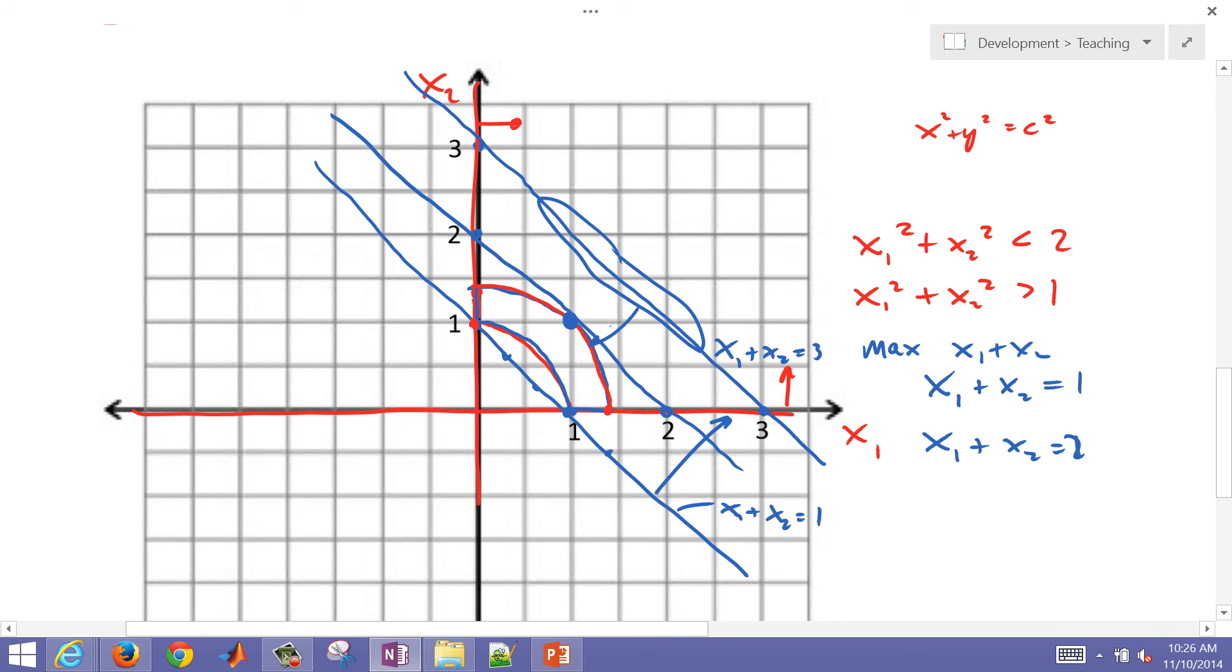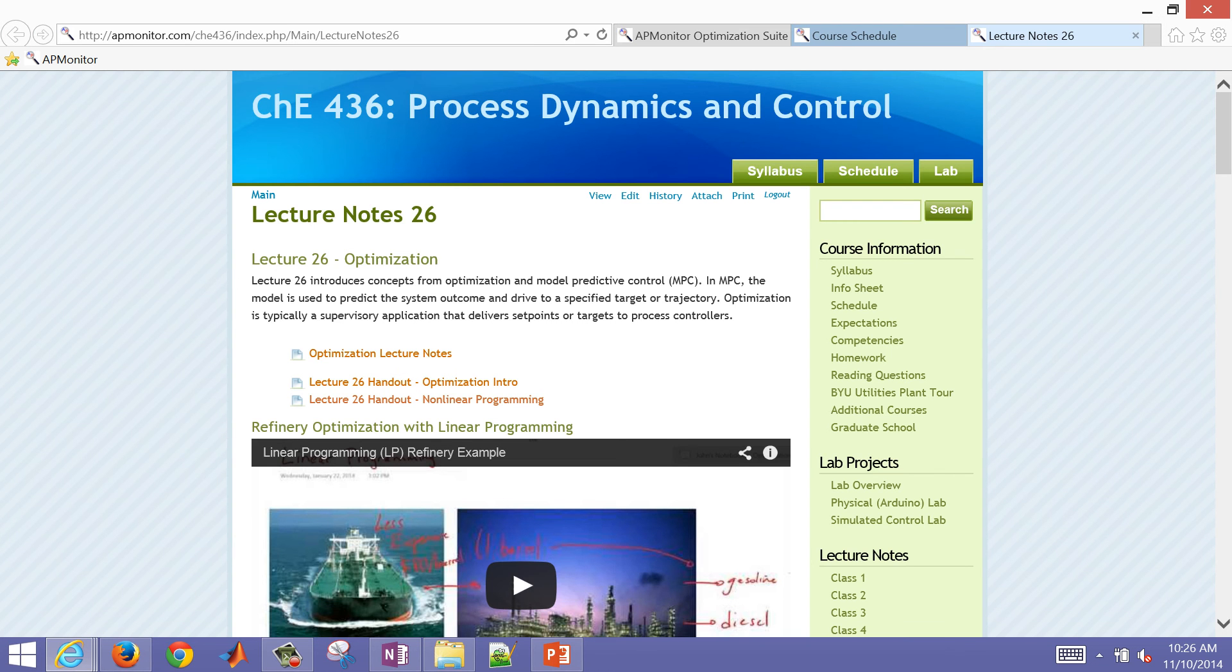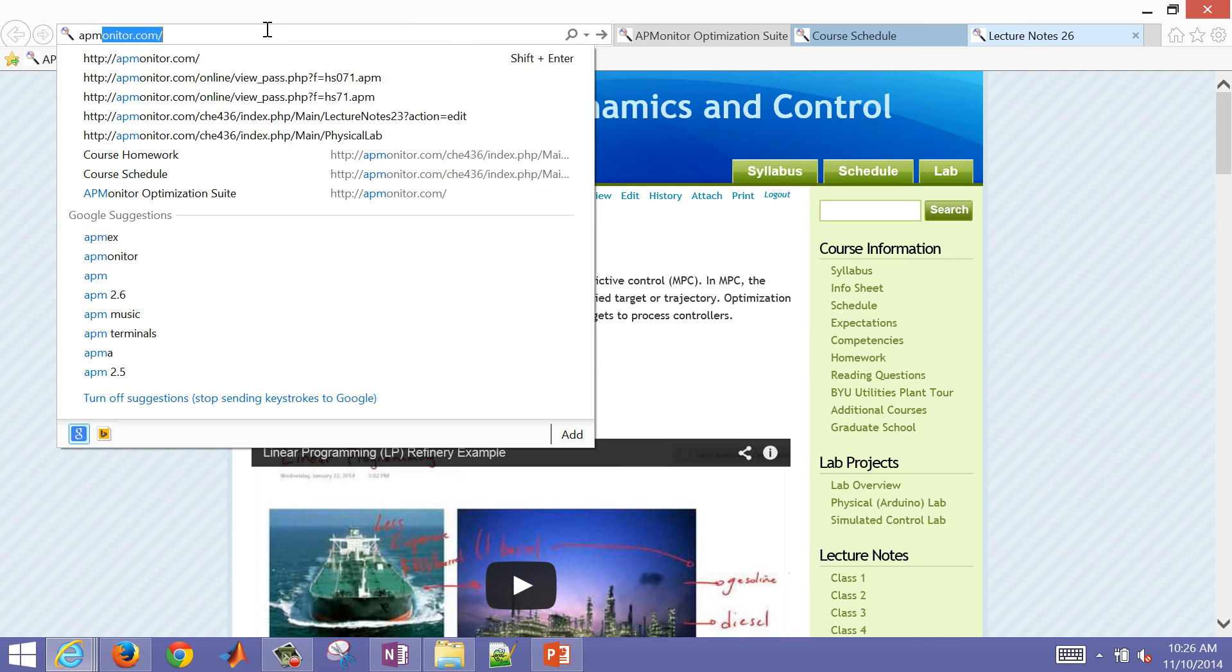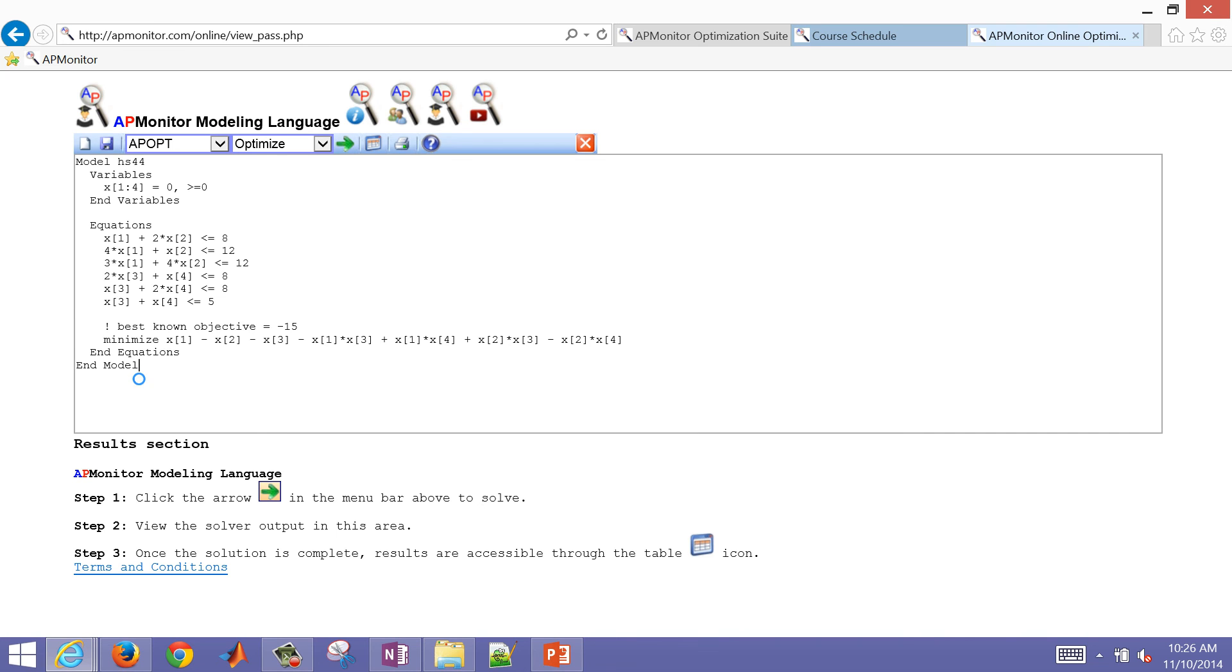Typically, we don't use graphical methods for solving most optimization problems. We use nonlinear or linear programming solvers. So one of those is here at the apmonitor.com website. The way you can access this is just coming to apmonitor.com and then click solve optimization problems. And we're just going to replace this with a couple variables.